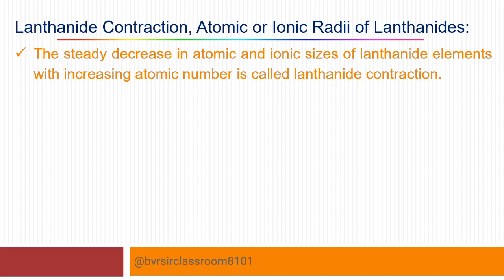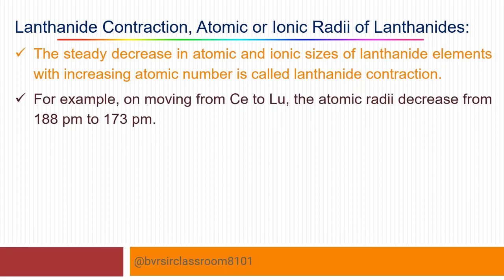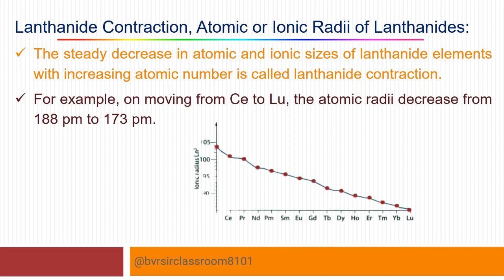With increasing atomic number from cerium to lutetium, the atomic number increases from 58 to 71, but the size steadily decreases. For example, on moving from cerium to lutetium, the atomic radii decrease from 188 picometers to 173 picometers — this gradual decrease is clearly seen on a graph.